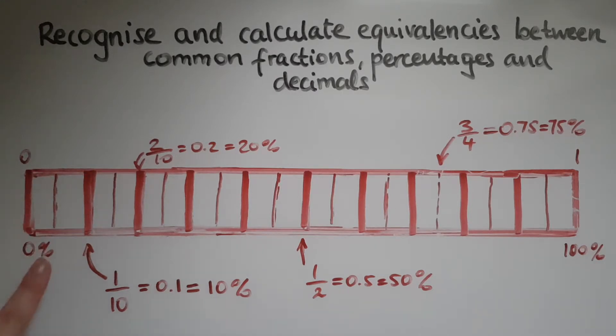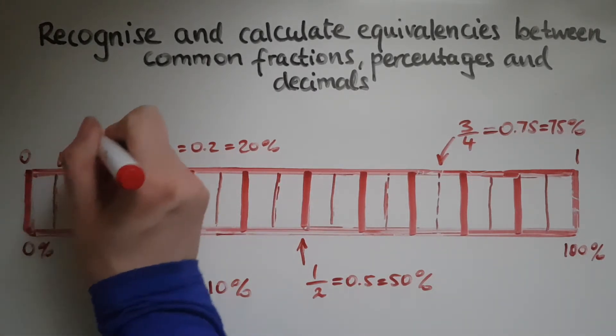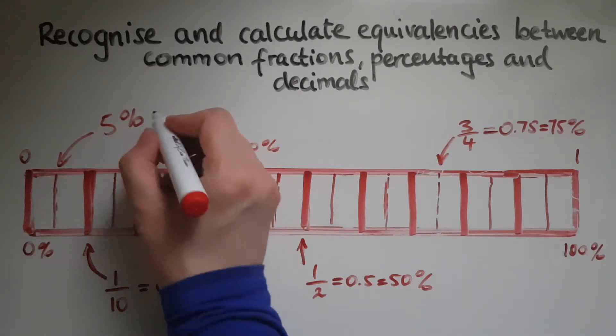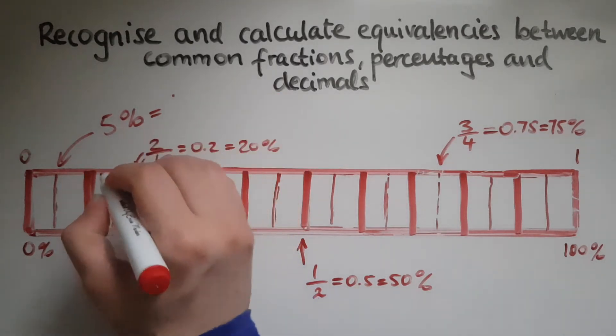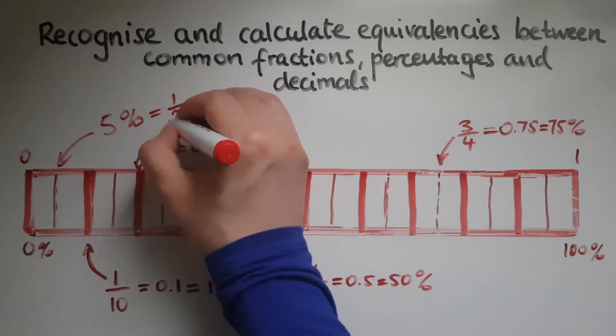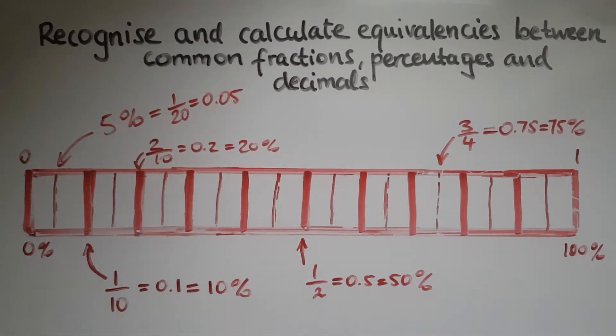And this one here is 5% which is the same as saying 5 out of 100 or 1 out of 20. And we write that as 0.05.